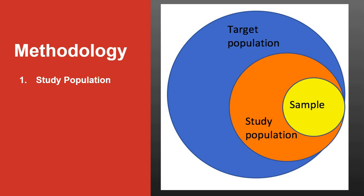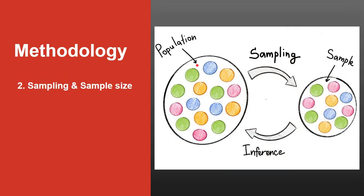Suppose we do a study on diabetic foot in patients coming to our hospital, the target population will be all diabetic foot patients whom we want to generalize our findings. But the diabetic patients coming to our hospital will be study population. Among them, whom you are including in the study is called sample. The process by which you select your sample from the population is called sampling. The inference will be for the study population.